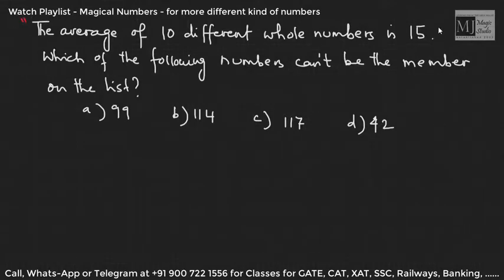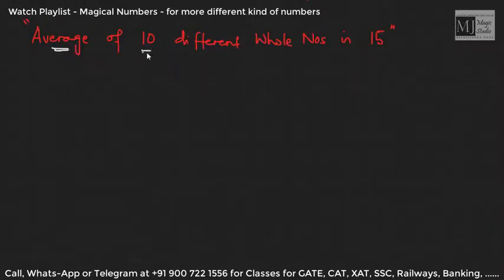The average of 10 different whole numbers is 15. What can be the total of all members? 10 into 15, that is 150. Perfect. Now first part, second part.